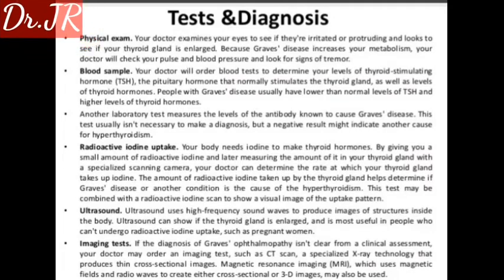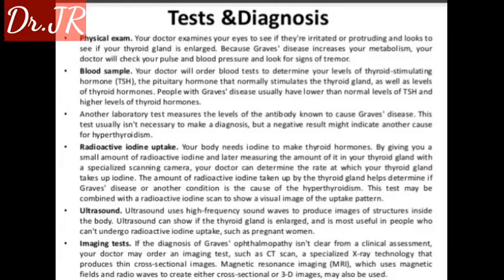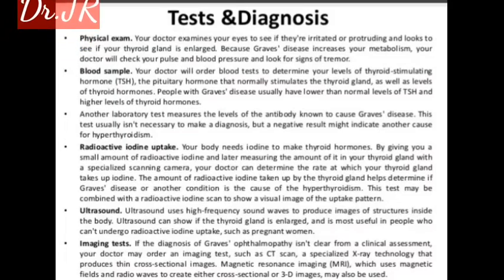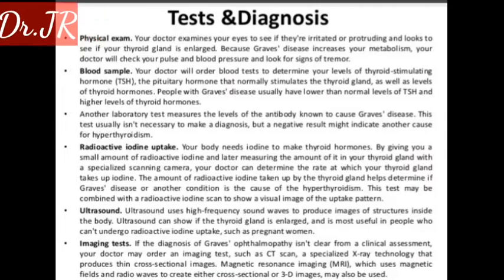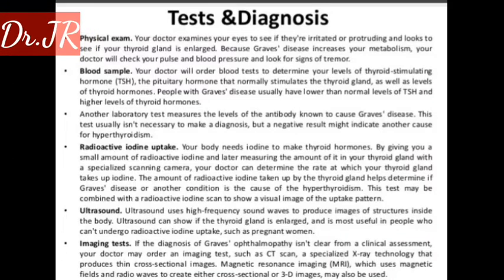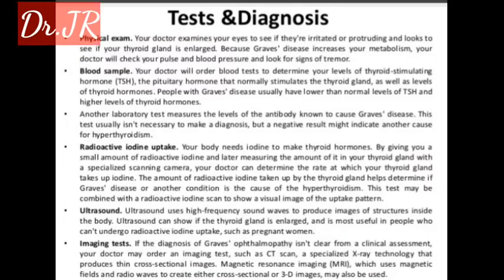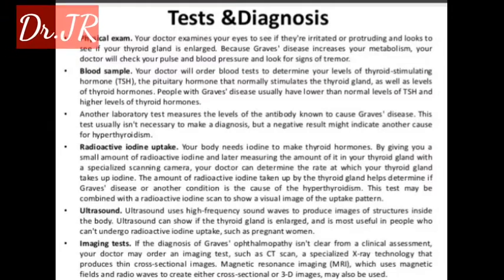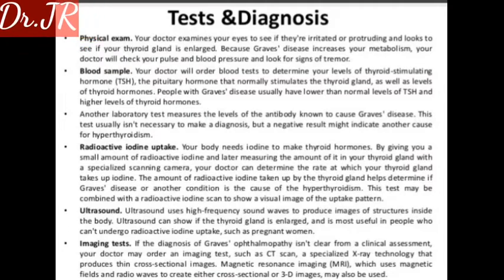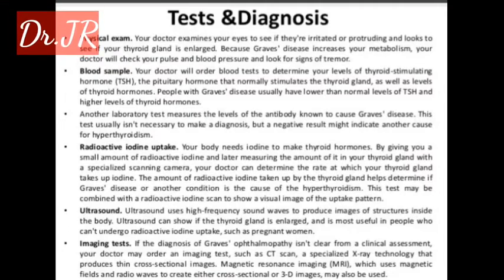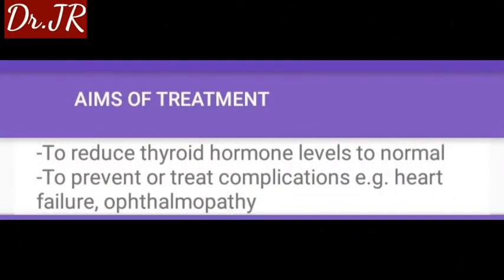Ultrasound uses high-frequency sound waves to produce images of structures inside the body. Ultrasound can show if the thyroid gland is enlarged and is most useful in people who can't undergo radioactive iodine uptake, such as pregnant women. If the diagnosis of Graves' ophthalmopathy isn't clear from a clinical assessment, your doctor may order imaging tests such as a CT scan or MRI, which uses magnetic fields and radio waves to create cross-sectional or 3D images.